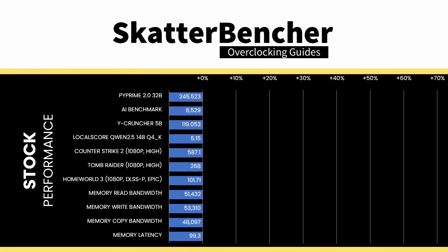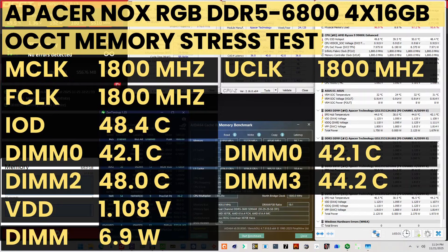3600? Is this DDR4 memory? Here's the benchmark performance at stock. When running the OCCT memory stress test, the average DIMM temperature ranges from 42.1 to 48 degrees Celsius. The average DIMM voltage is 1.108 volts, and the total DIMM power consumption is 6.9 watts.